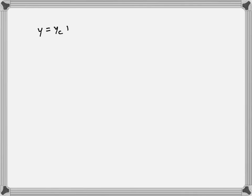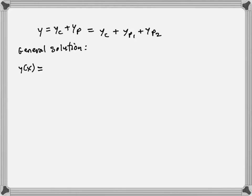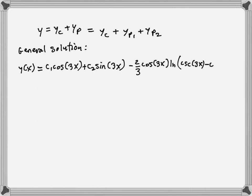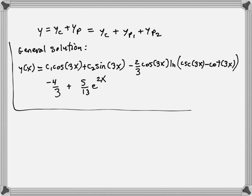The general solution is Y = YC + YP1 + YP2: Y(x) = C1·cos(3x) + C2·sin(3x) − (2/3)·cos(3x)·ln|csc(3x) − cot(3x)| − (4/3) + (5/13)e^(2x).